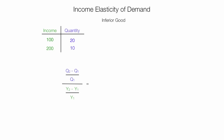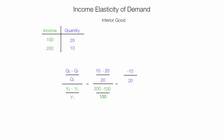Let me make some calculations. I have Q2 (which is 10) minus Q1 (which is 20), divided by the first quantity (which is 20), all divided by 200 minus 100, divided by the first income (which is 100). This equals 10 minus 20, which is negative 10 — making it an inferior good — divided by 20, all divided by 100 divided by 100. This equals negative 0.5 divided by 1, or simply negative 0.5, which makes it an inferior good.